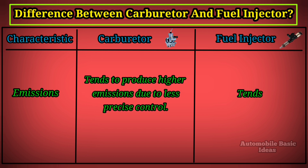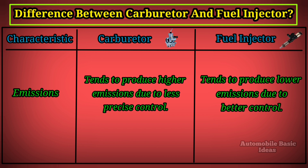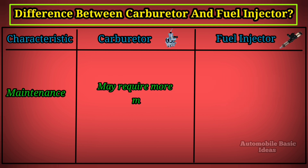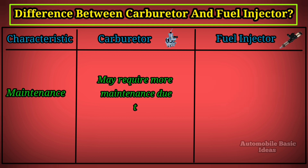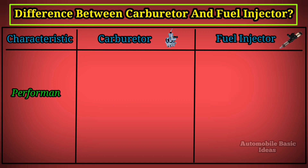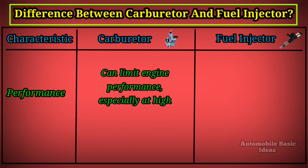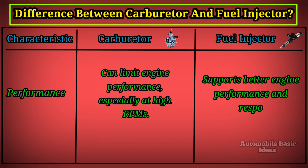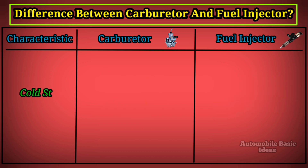Fuel injectors tend to produce lower emissions due to better control. Maintenance: carburetors may require more maintenance due to moving parts, while fuel injectors typically require less maintenance. Performance: carburetors can limit engine performance especially at high RPMs, whereas fuel injectors support better engine performance and responsiveness.